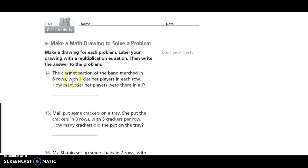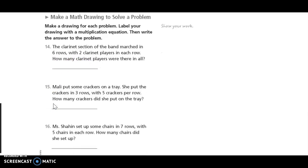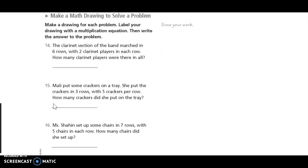We look back, it tells us how many rows, six rows, and it tells us that in all six rows, there are two clarinet players. So I will draw six rows and put two clarinet players in each row. Write your multiplication equation to solve this. Six times two, which equals twelve. Now pause the video to draw your array.